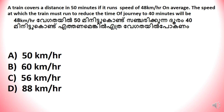A train covers a distance in 50 minutes if it runs at a speed of 48 km per hour on average. The speed at which the train must run to reduce the time of journey to 40 minutes will be?